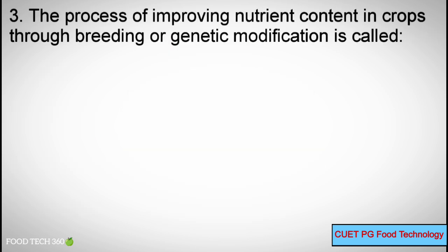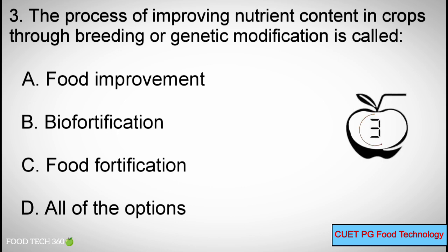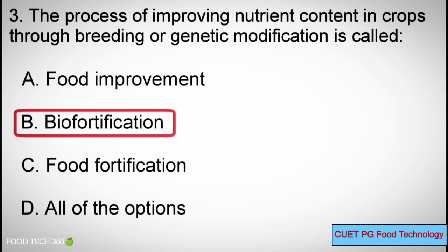Question number 3. The process of improving nutrient contents in crops through breeding or genetic modification is called: Options: A. Food Improvement, B. Biofortification, C. Food Fortification, D. All of the options. Correct answer: B. Biofortification.